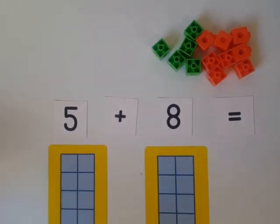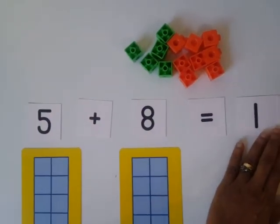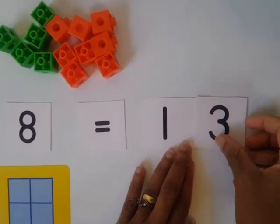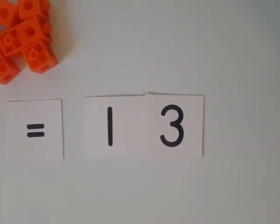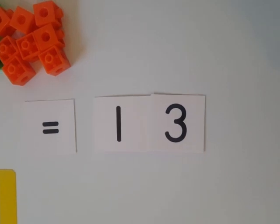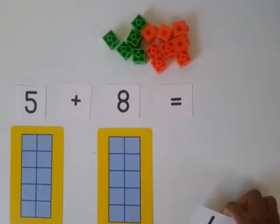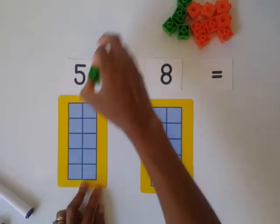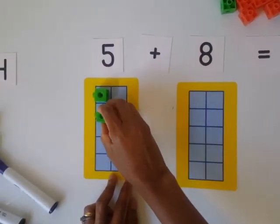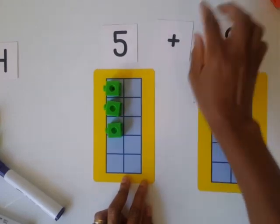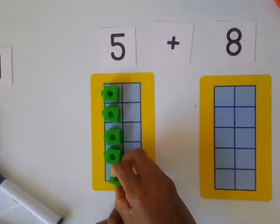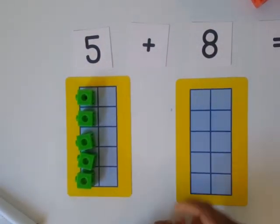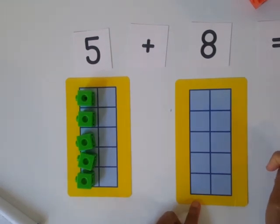How do we write 13? This is how we write 13 — ten and three more makes 13. Let's say we want to use a different strategy: the ten frame strategy. So this is 5: 1, 2, 3, 4, 5 — five cubes to represent the number 5. Eight — how many cubes will we use to represent the number 8? Of course it's 8. So let's go: 1, 2, 3, 4, 5, 6, 7, 8.